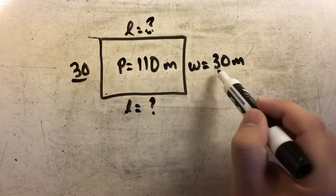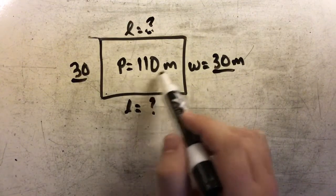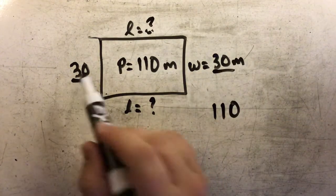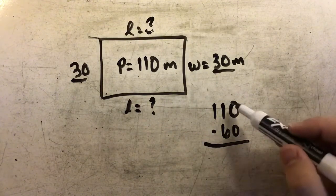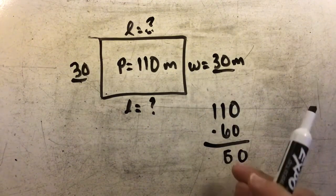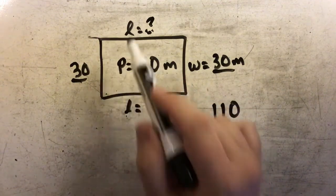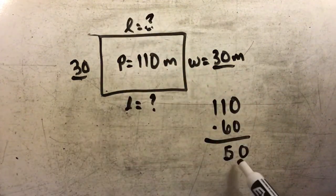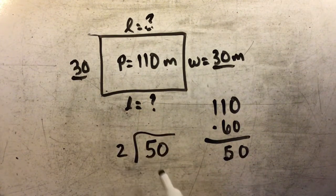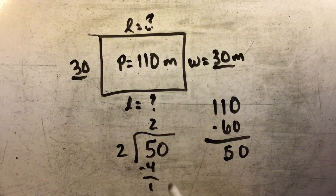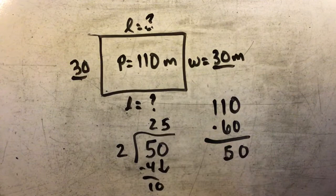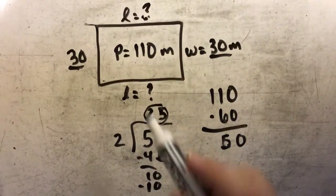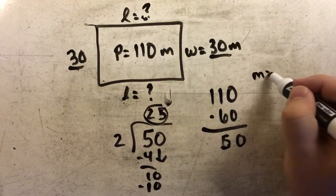What I'm going to do is first subtract both of my known side lengths from my total perimeter. My total perimeter was 110 meters. I'm going to subtract 30 and 30, which gives me a total of 60 that I'm subtracting. 0 minus 0 is 0, and 11 minus 6 leaves me with 5, so my two lengths have to equal 50 together. In order to find just the length of one side, I divide 50 by 2. 2 goes into 5 twice with 1 left over, and 2 goes into 10 five times. So the length of one of my sides is 25 meters.